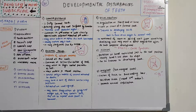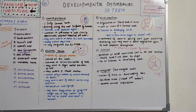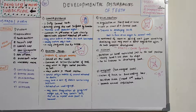Hello everyone, welcome back to another session in Dentistry and More. Let's continue our developmental disturbances of teeth related to shape or form. Last session we covered various anomalies seen with respect to the crown. Today's session is about anomalies with respect to shape or form seen in the root, so let's see what those are.